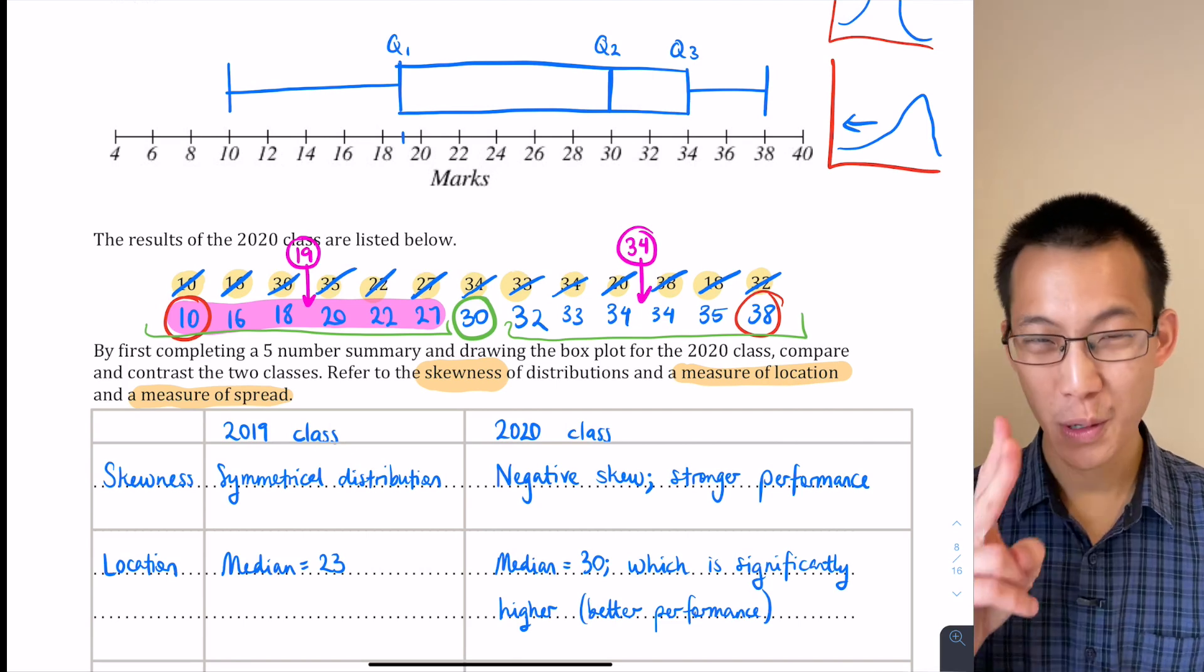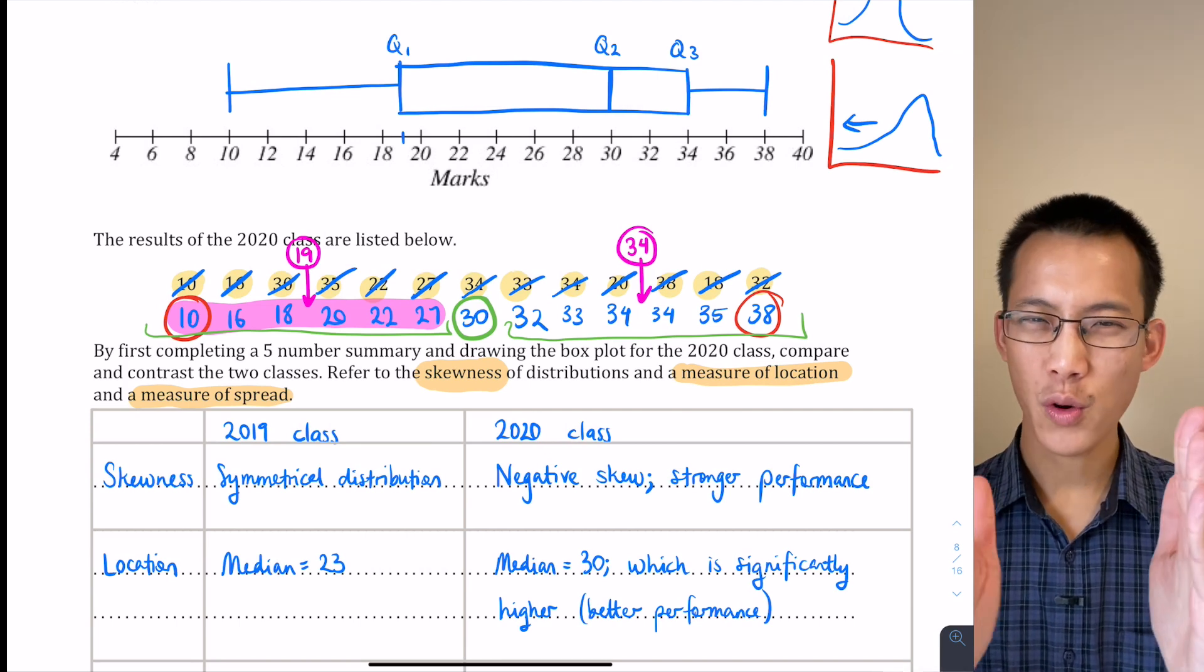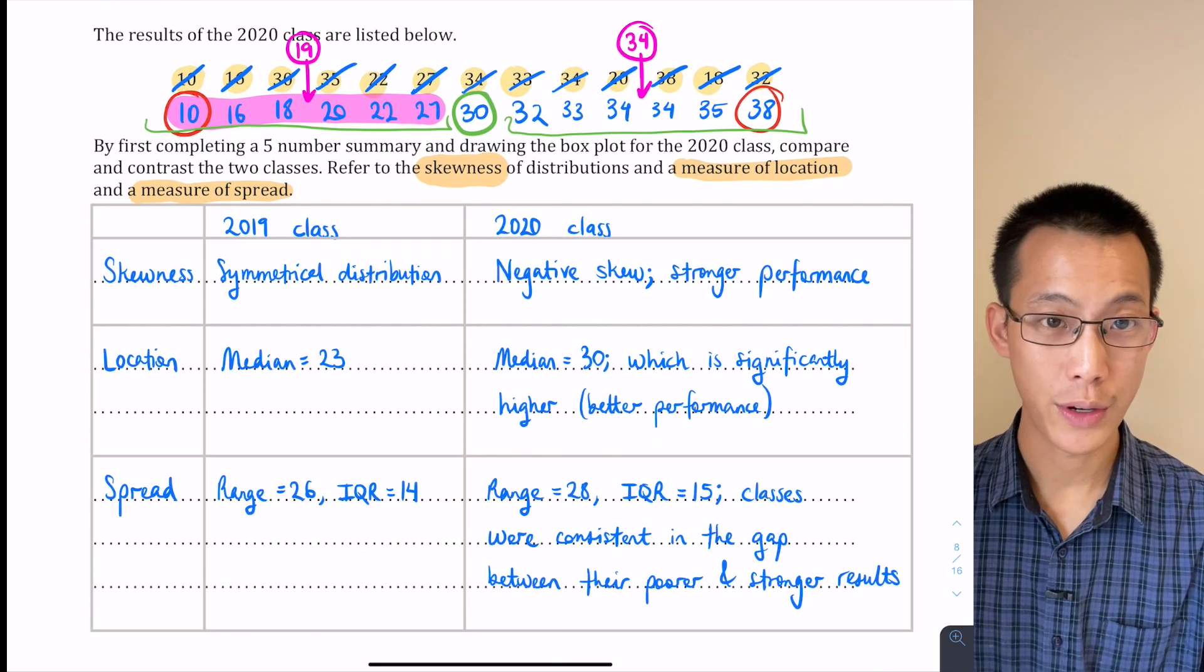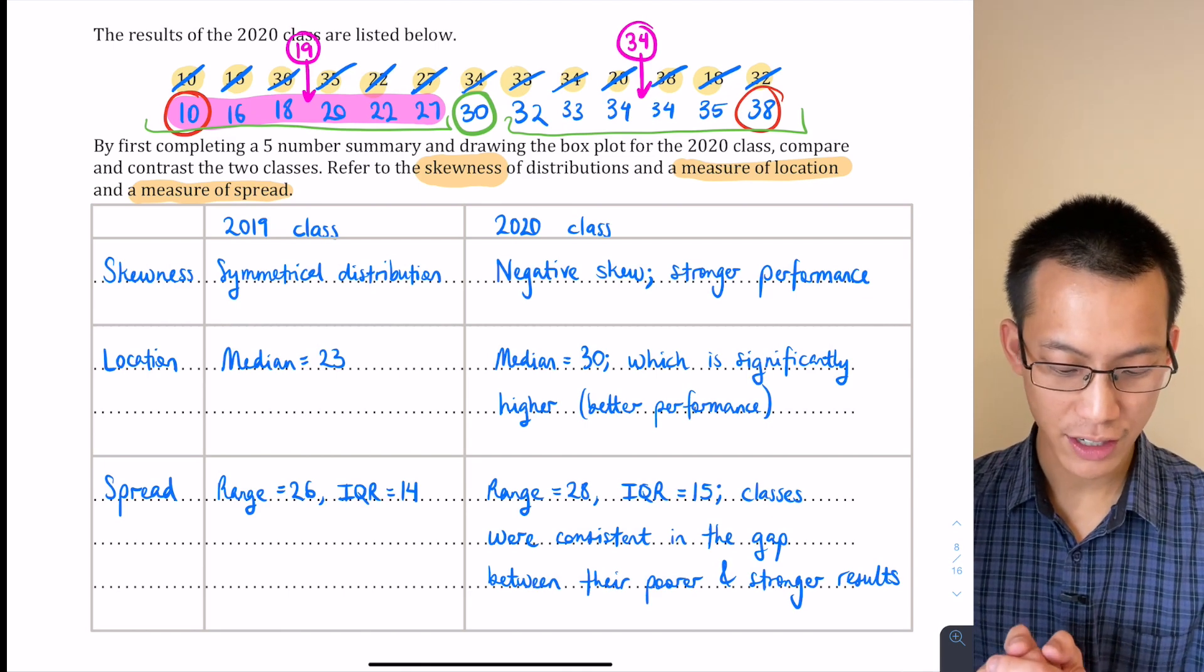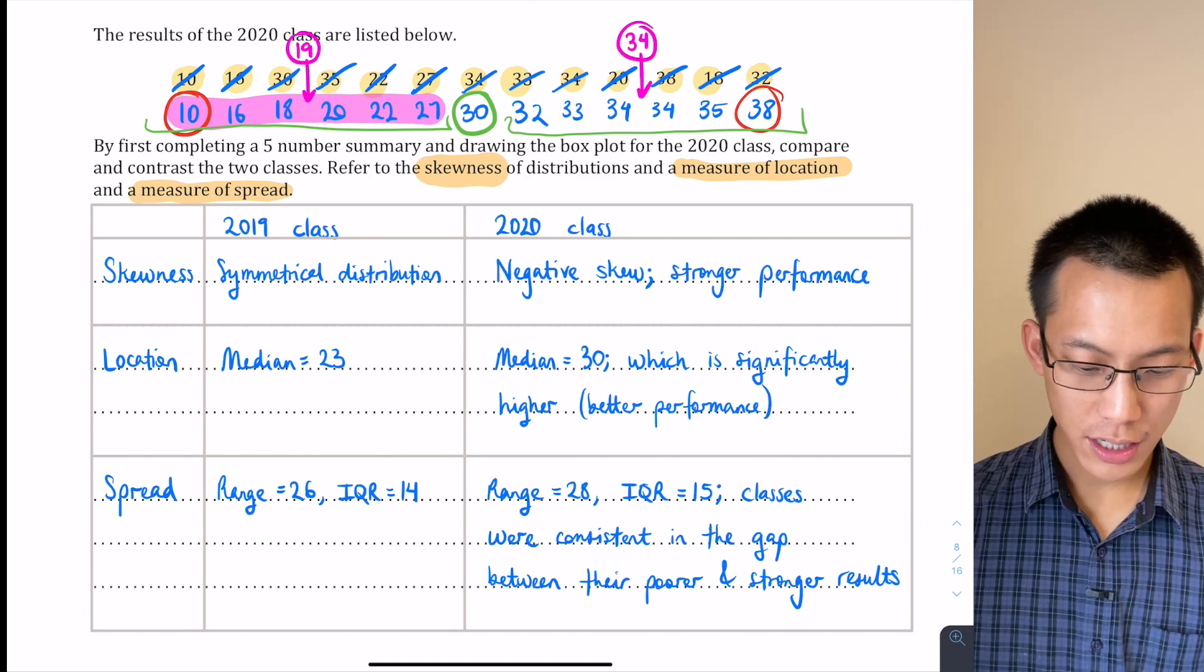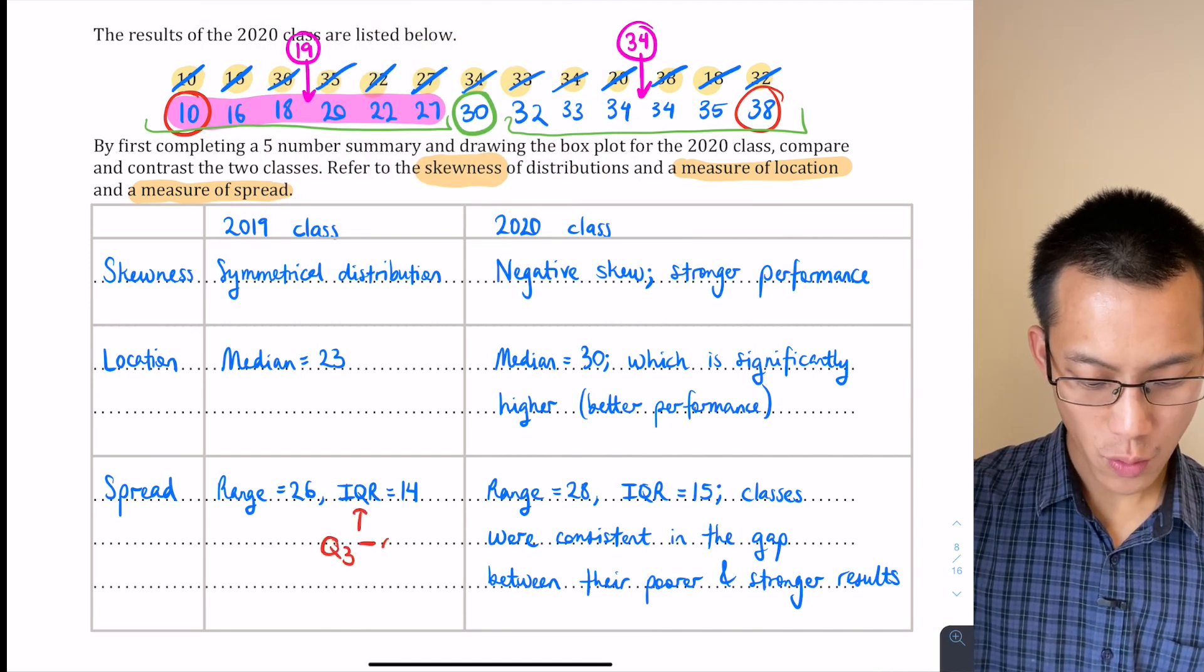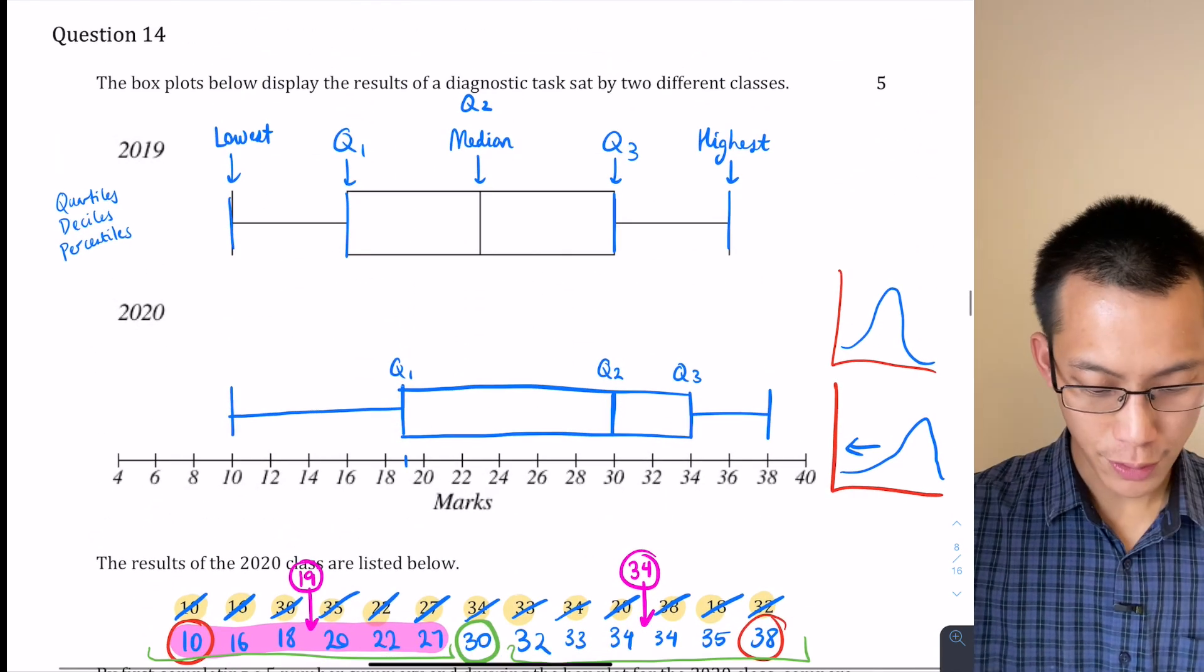Then we go to measure of spread. Now you've got two different kinds of measure of spread here: you've got range, and then you've got interquartile range, which is the difference between Q1 and Q3. So I've written about both. You can calculate the range by doing top value take away bottom value, which for the 2019 class is 26, for the 2020 class it's 28. And then you do the interquartile range—let me just write it in here for you as Q3 take away Q1.